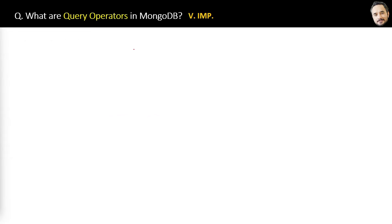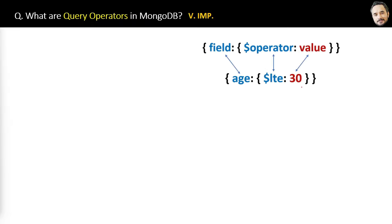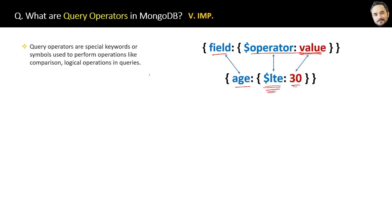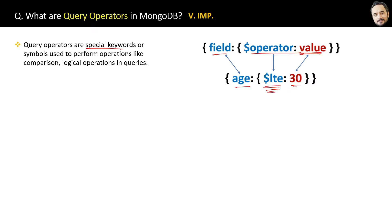What are query operators in MongoDB? For example, in mathematics we have plus, minus, equal to as operators. Here is an example: a condition where we are checking age is less than or equal to 30 — here 'age' is the field, '30' is the value, and '$lte' (less than or equal to) is the query operator. The proper definition is: query operators are special keywords or symbols used to perform operations like comparison and logical operations in queries.